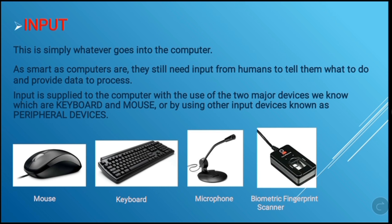The input operation: input is simply whatever goes into the computer. As smart as computers are, they still need input from humans to tell them what to do and provide data to process. Input is applied to the computer using two major devices — the keyboard and mouse — or by using other input devices known as peripheral devices. Here we have images showing input devices: a mouse, a keyboard, a microphone for recording audio into the computer, and a biometric fingerprint scanner.